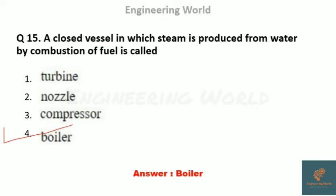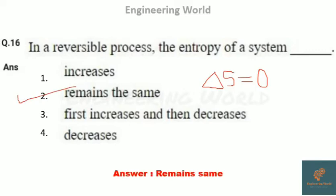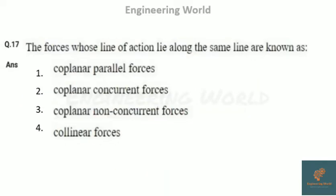The next question: in a reversible process, what happens to the entropy of the system? By the Clausius inequality, for a reversible process delta S equals zero, meaning S2 minus S1 equals zero, so S2 equals S1. The answer is: entropy of the system remains the same.